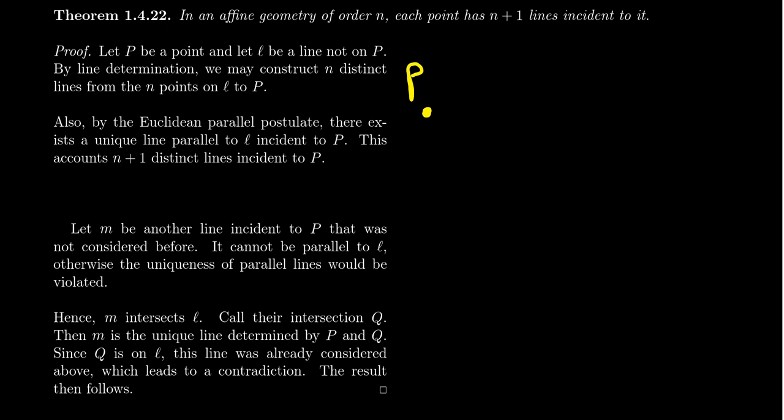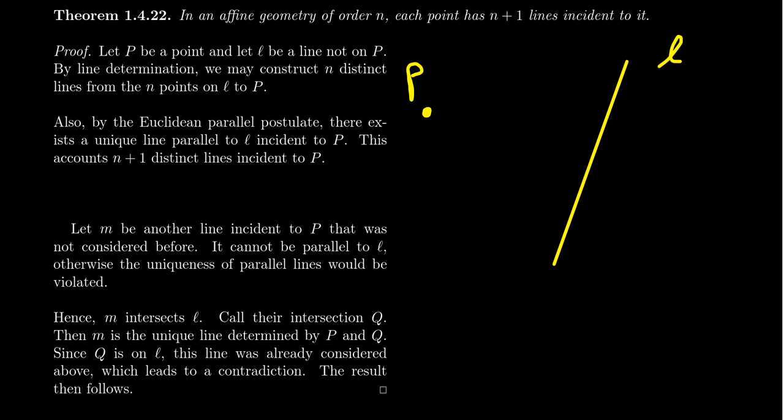To prove this, we choose an arbitrary point P, and consider some line L which is not on P. This is a theorem of incidence geometry. If all lines were on P, that would violate the non-concurrency theorem, because we took non-collinearity as an axiom — not all points are on the same line, and we also proved that not all lines are on the same point. So there is some line L not on P.